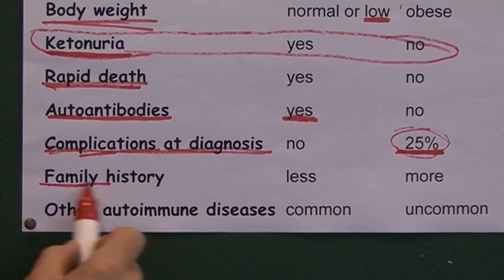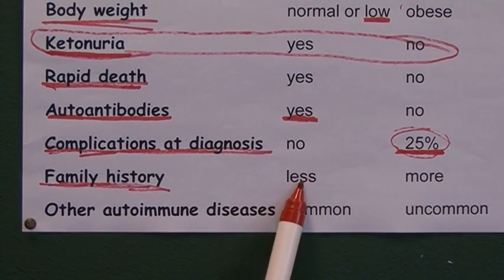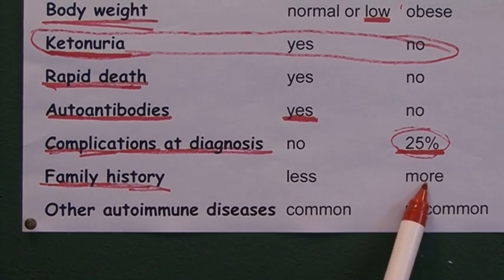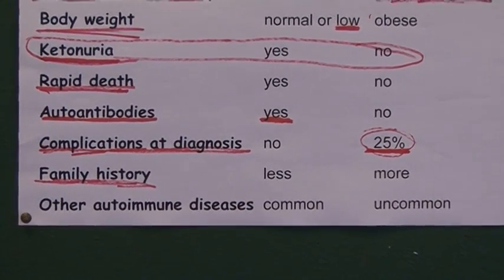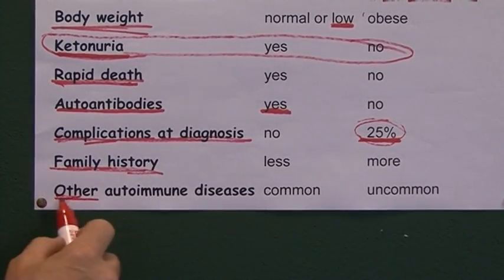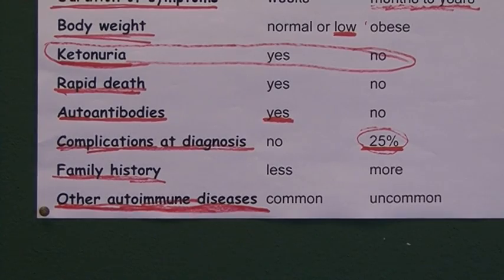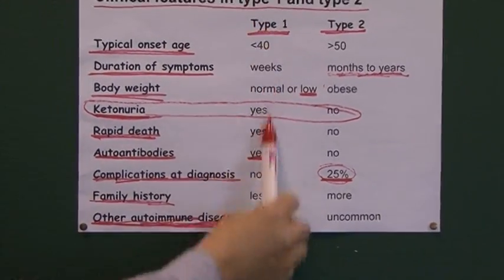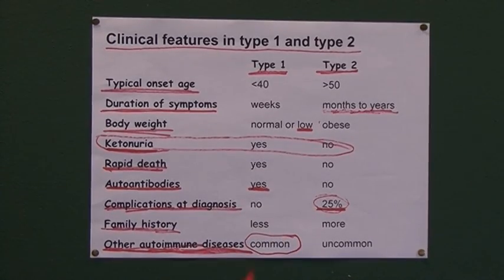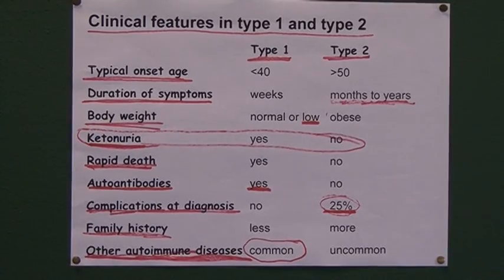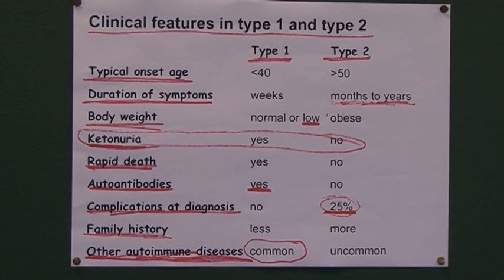Family history: there is some genetic tendency in type 1, but it's less than in type 2. Type 2 is the more familial of the two types. Additionally, because type 1 diabetes is an autoimmune disease, patients with type 1 are more likely to have other autoimmune diseases as well. Other autoimmune diseases can accompany type 1 diabetes, whereas in type 2 this is uncommon, since type 2 is not an autoimmune disease.